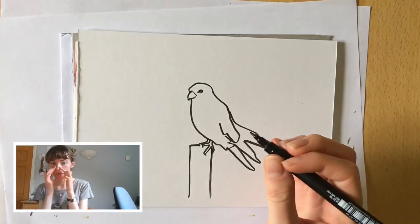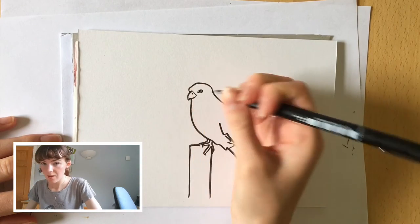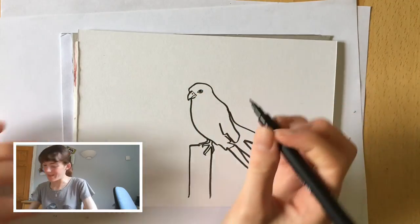You can also see the nostril of the falcon's beak, so we'll draw that on. That's at the top of the beak, just here. And then you can see the beak, the center bit of it, just here, like this line.